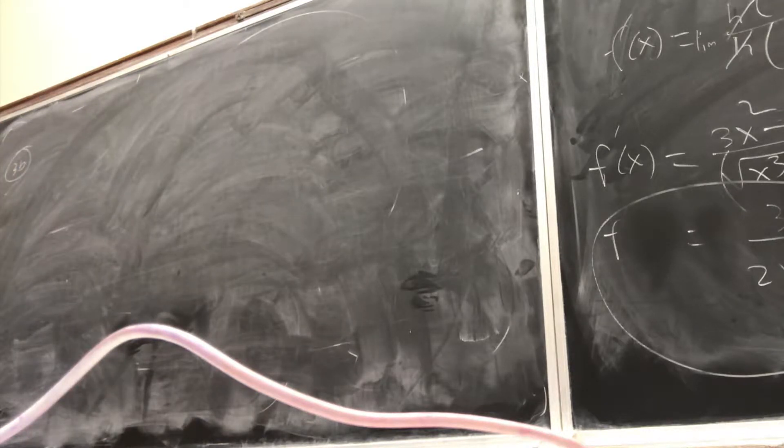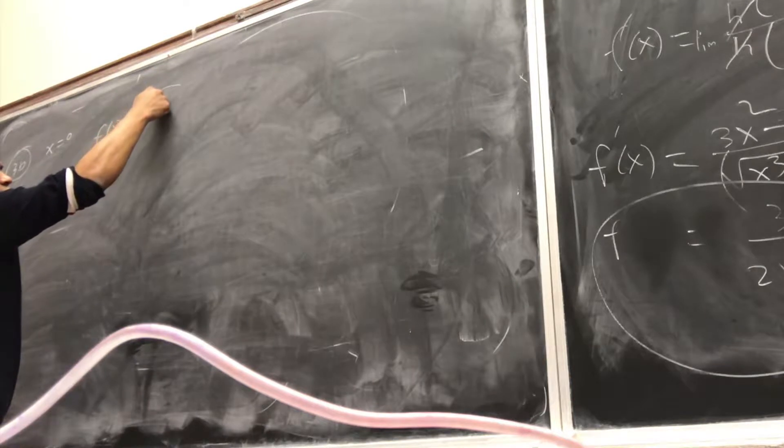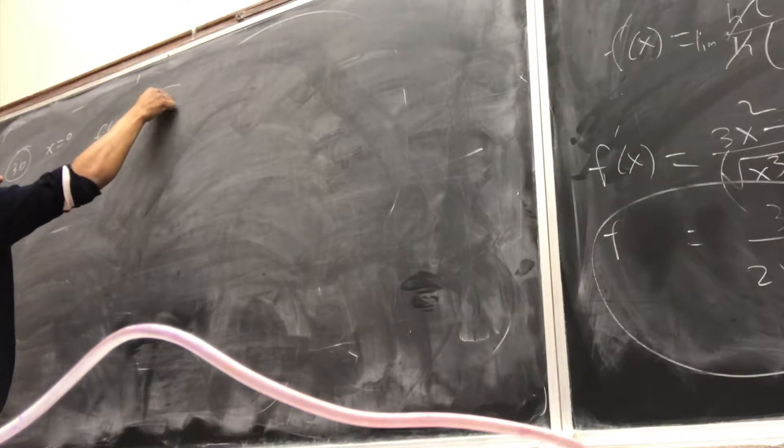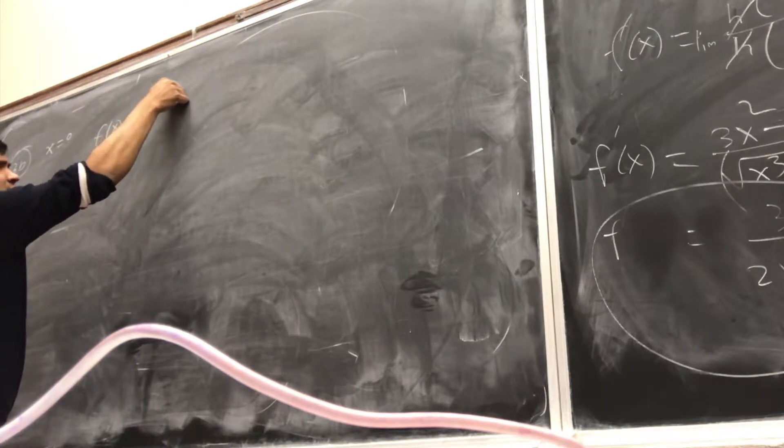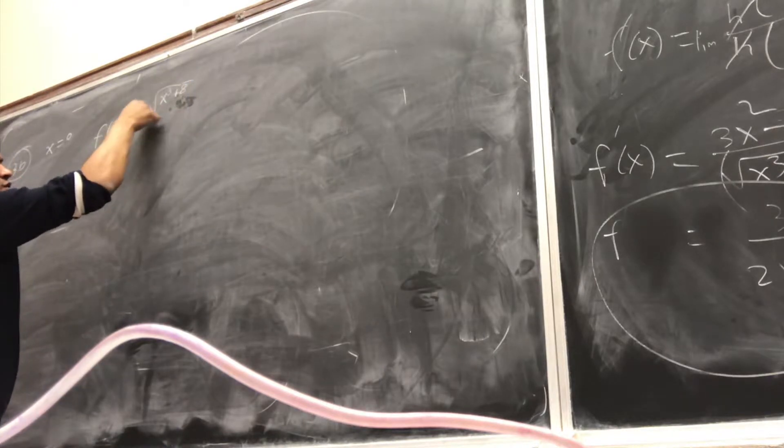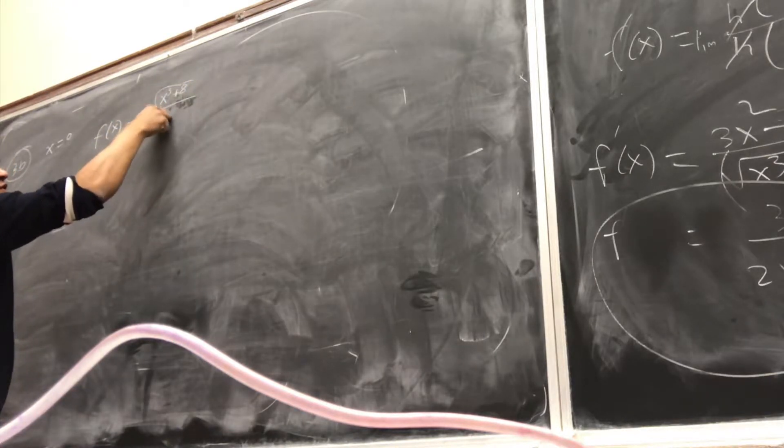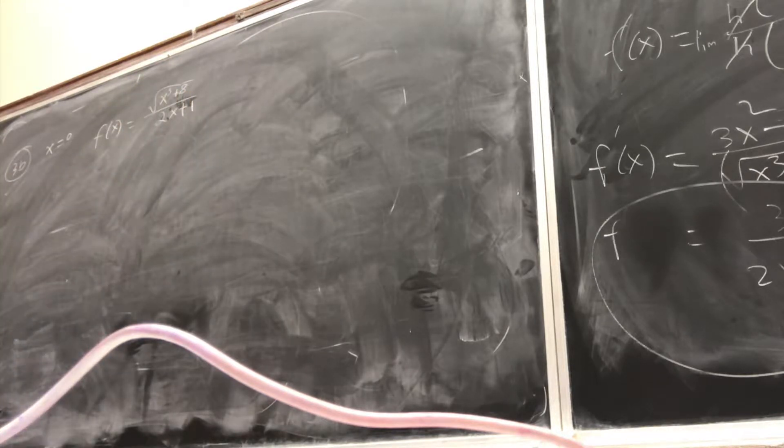Find the equation of tangent line at x equals 0. f of x equals the square root of x to the third plus 8 over 2x plus 1. Did I write it correctly?